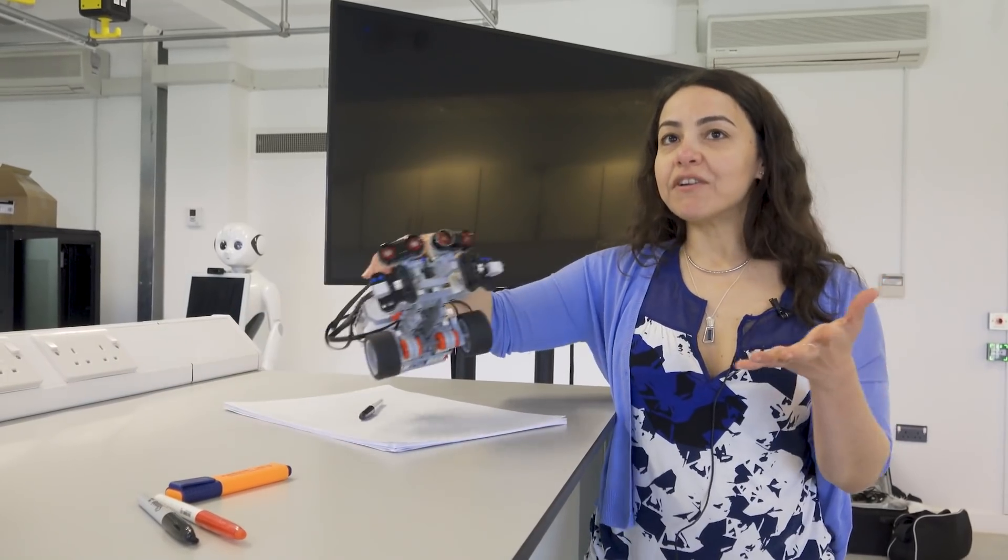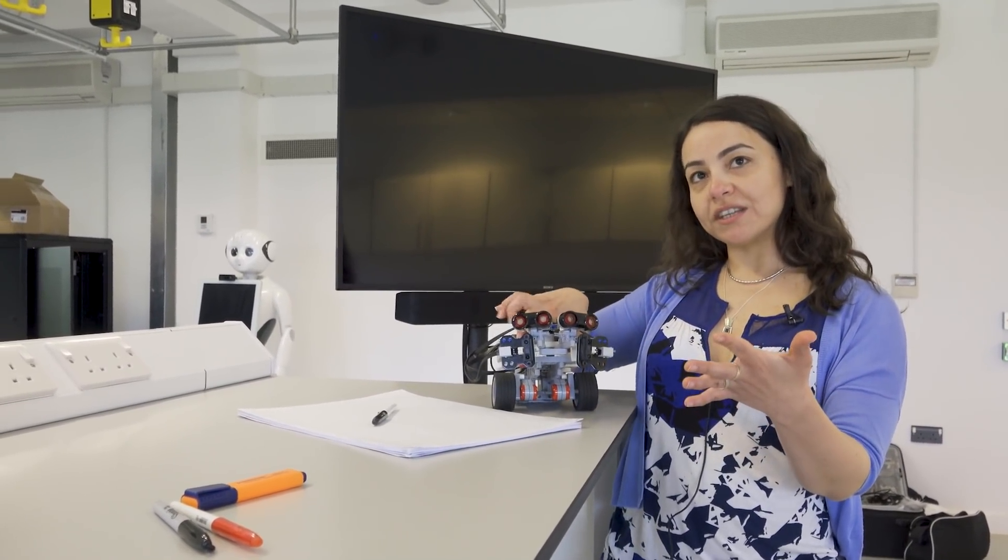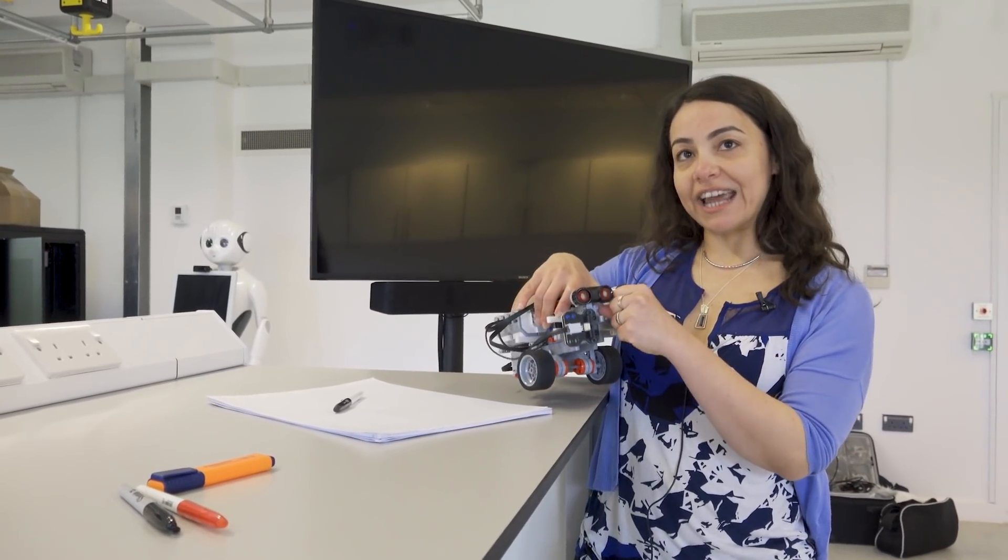If you utilize computer vision for this robot, you wouldn't train it with static images—you would work with a dynamic scene. The robot would need to probably leverage its movement capabilities to get a better view of the scene, maybe dynamically change it, and do it in real time.